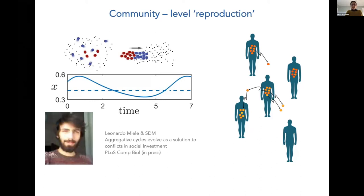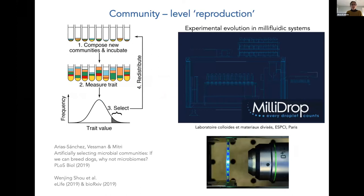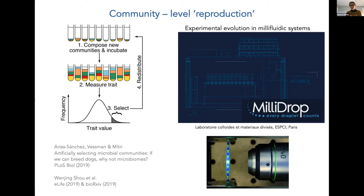This scaffold can be imposed also in the lab, and these ideas are turning into practice more and more. In this moment, people want to use the possibility of reproducing communities in the lab in order to select for certain properties that are properties of the community. Some colleagues in Paris are developing machines that would allow testing in parallel many reactors and possibly in the future applying selection to these communities for a property that is a property of the community.